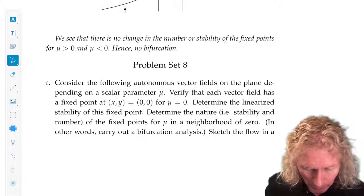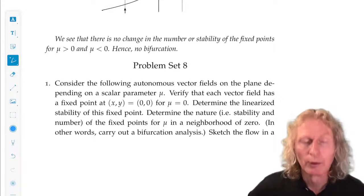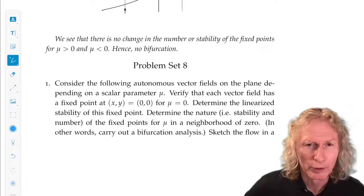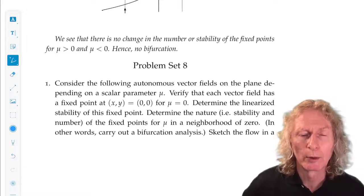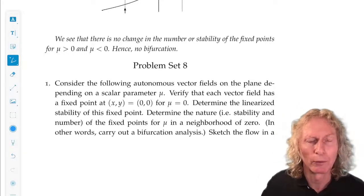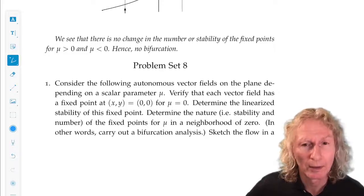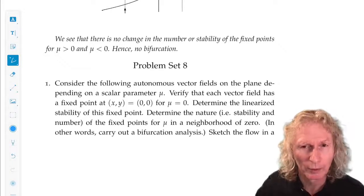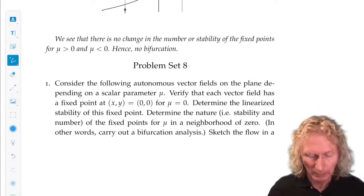So what do I want you to do? I want you to first verify that the origin is a fixed point for mu equals zero. That should be pretty straightforward. And then to look at linearized stability of that fixed point as a function of mu.